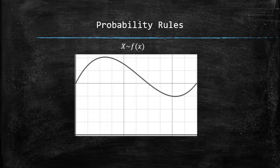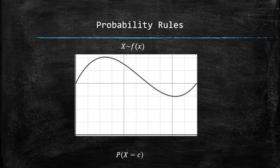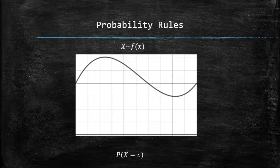Let's find the probability of x being equal to some number c. By definition, the probability of x being equal to a value c is the area of the line segment above the value c under the probability density curve. Since line segments don't have areas, the probability is equal to 0.